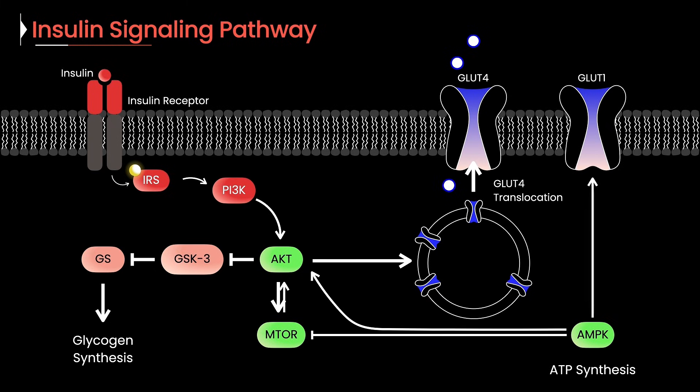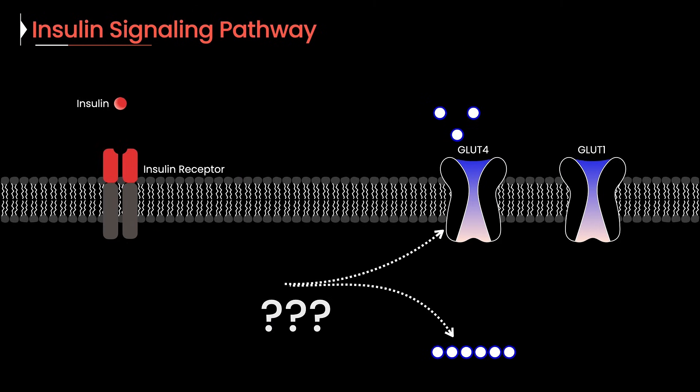Of course, this can't run on forever. It would spiral out of control. So once the signal reaches far enough, a kinase down the line comes back and shuts down the source. Now we've seen how signaling works, but where does the insulin signal actually go? How does it tell the cell to let glucose in and actually store it?